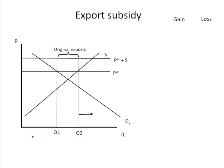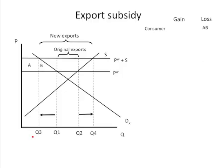Consequently, because there's a higher price for sales at home and abroad, you're going to have an increase in the amount produced domestically. The increase in price is going to reduce consumption to Q3. So now you have a new, expanded level of exports due to the subsidy. We have a consumer loss — domestic consumers are hurt by this policy. It's the area defined by the difference in price over the demand curve, as domestic consumers face higher prices competing with foreign consumers plus the government payment.